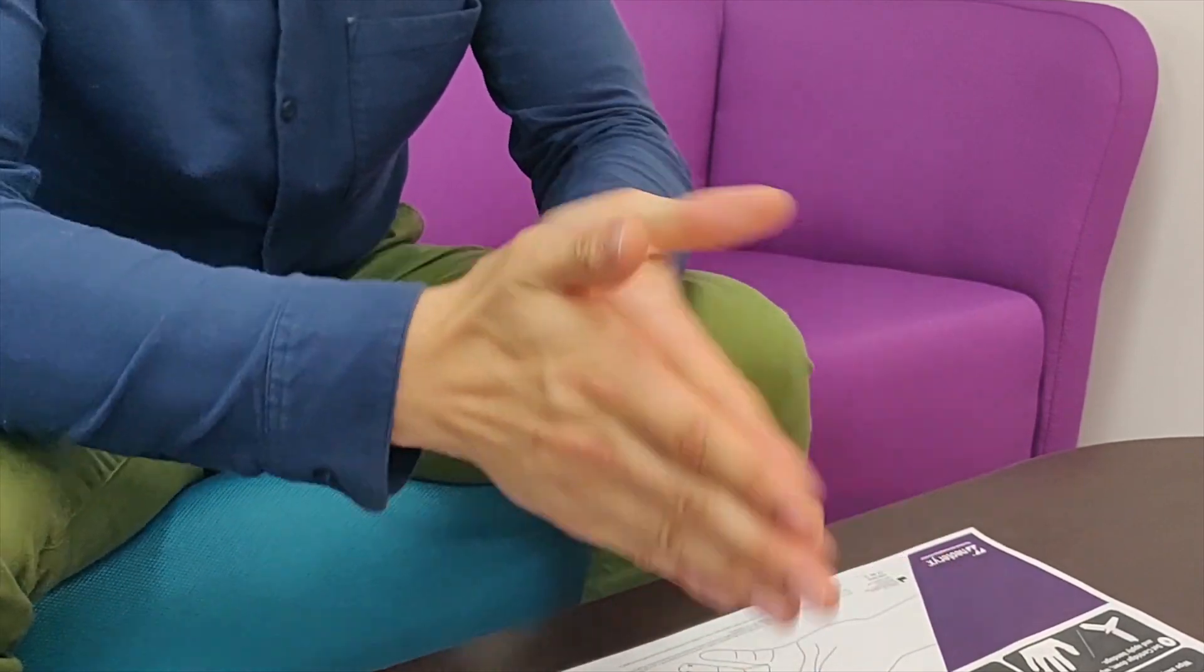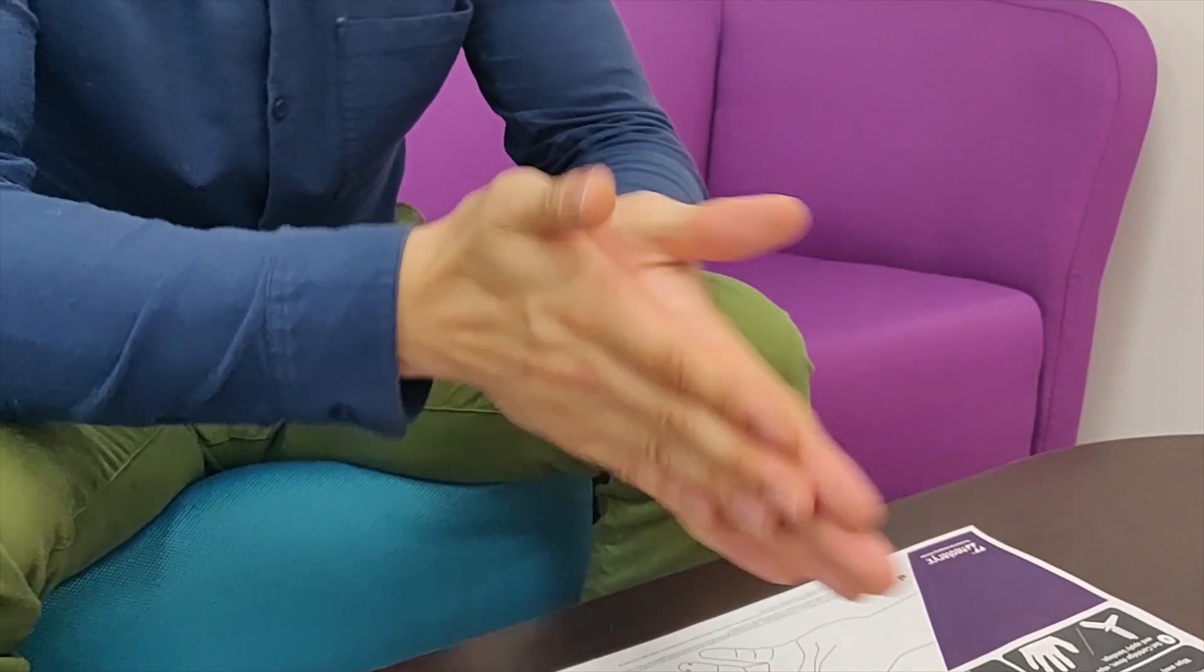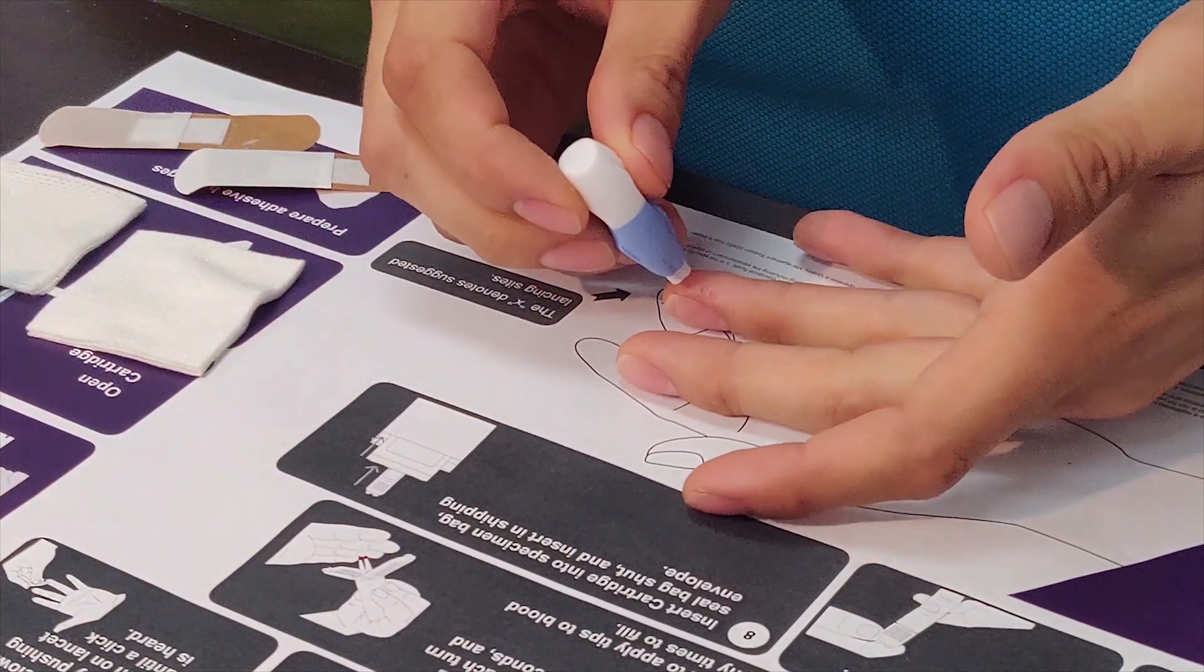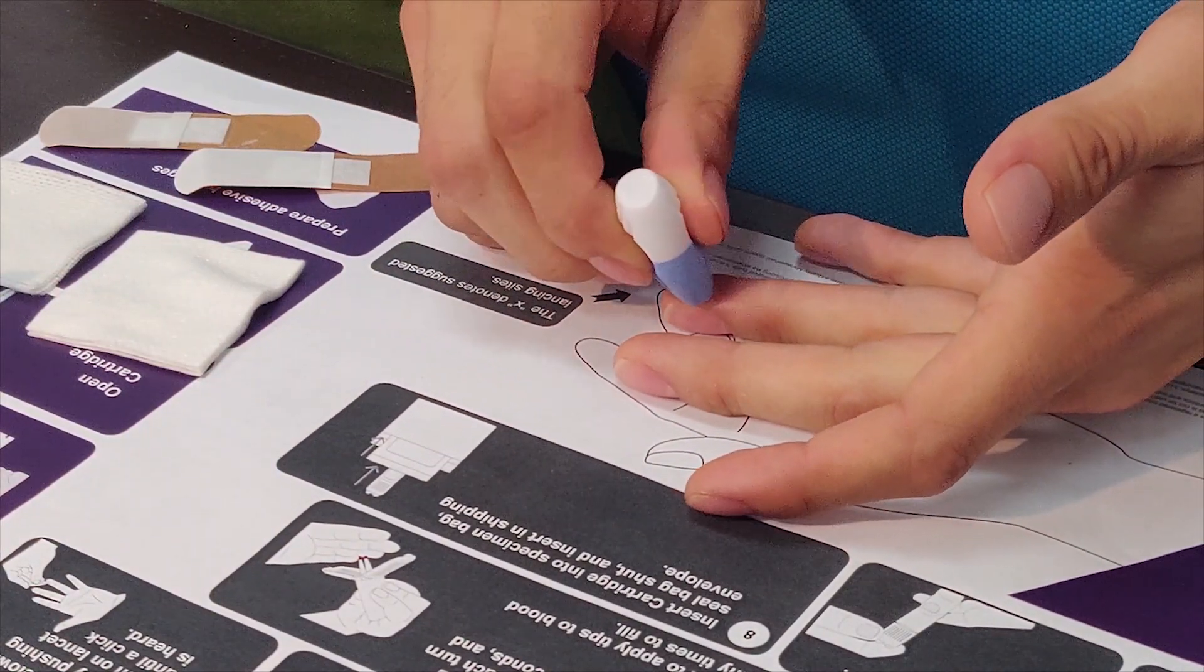Okay, let's begin. Vigorously rub your hands to warm them. Then place your hand down and position the lancet just off the center of the finger pad and push down. You'll hear a click.